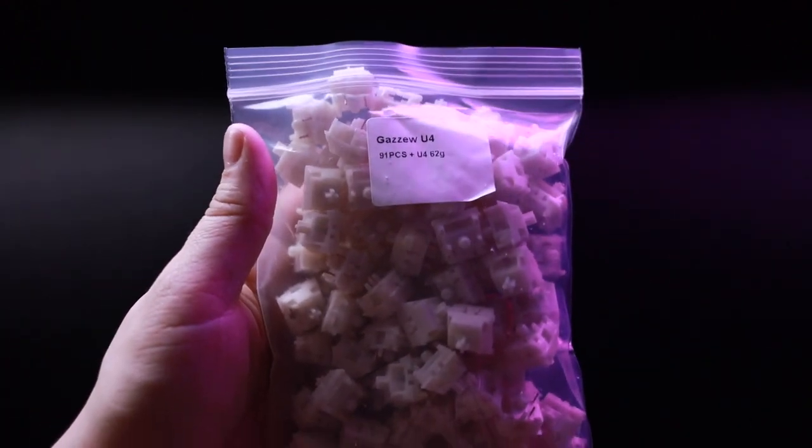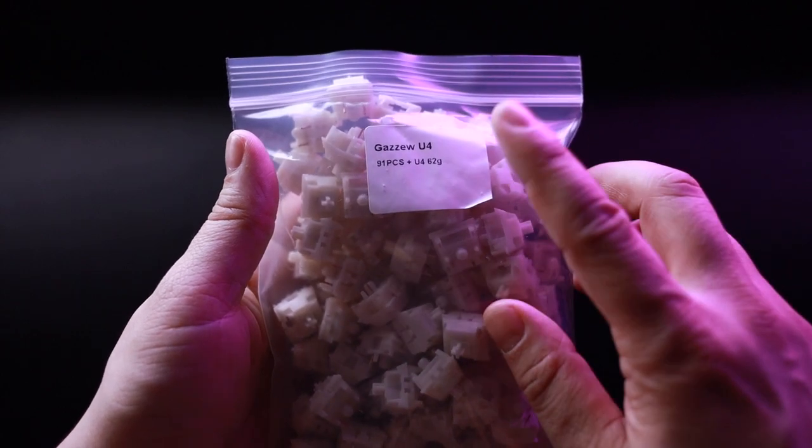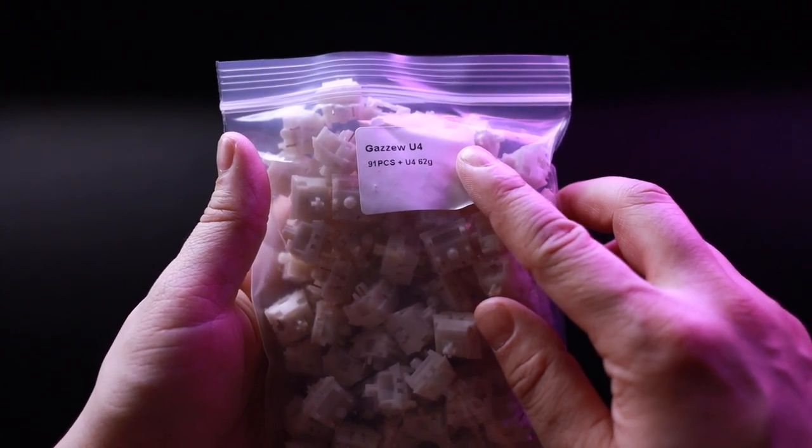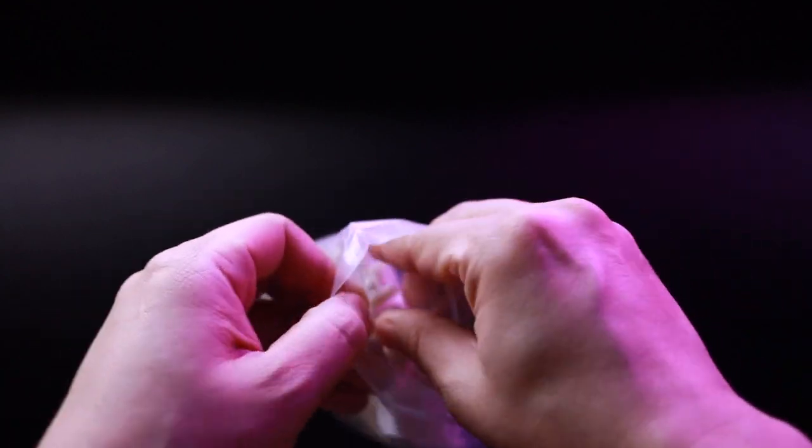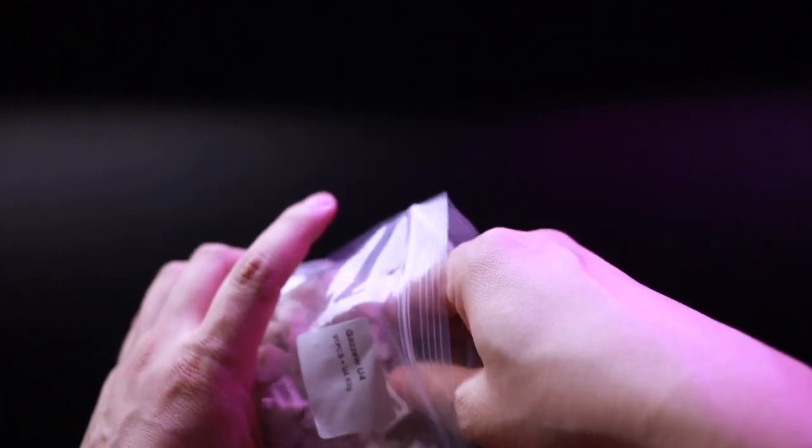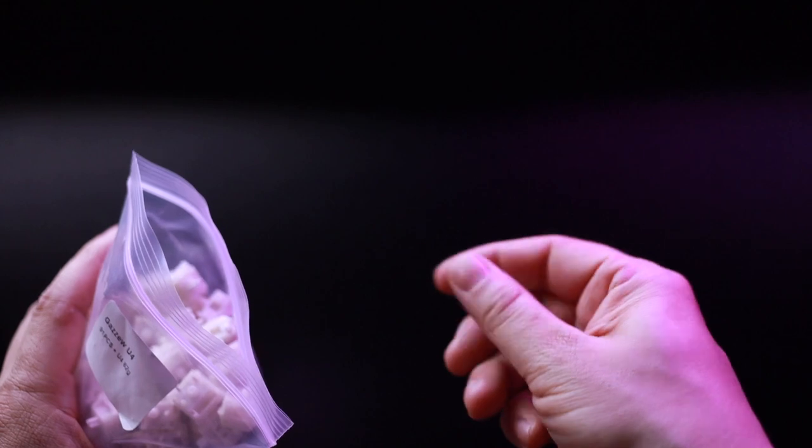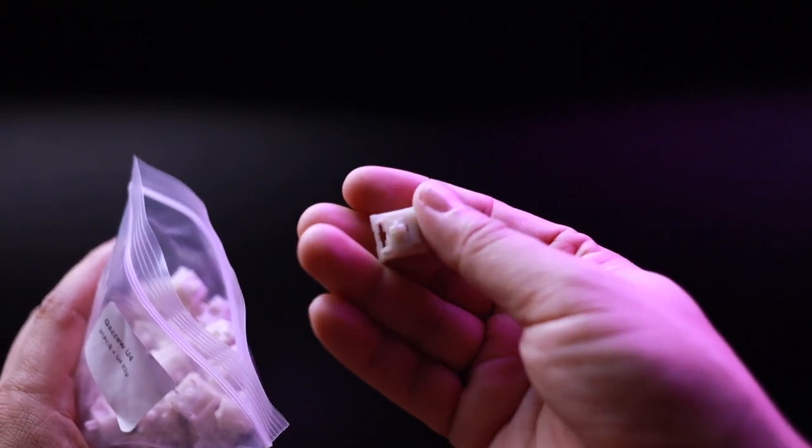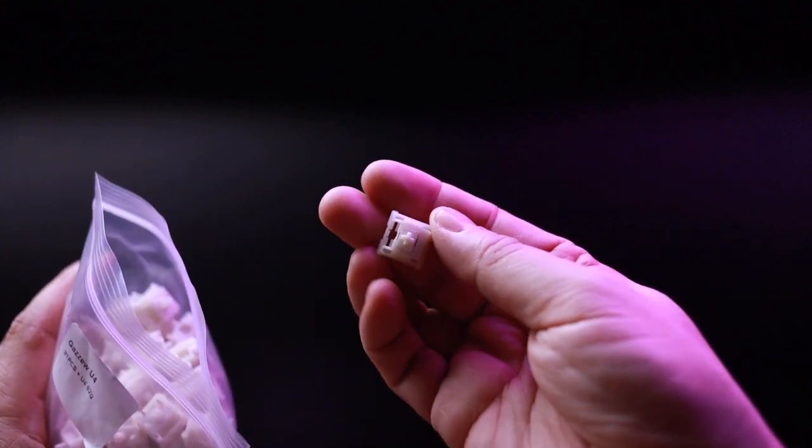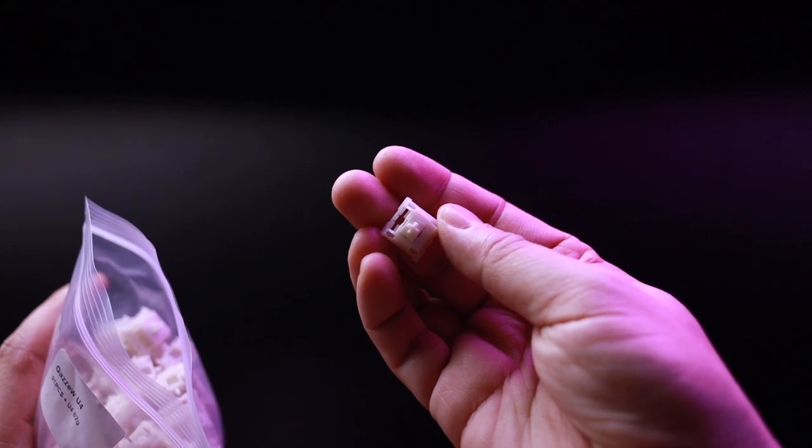For this video I went with the Boba U4 silent tactile switches because I wanted it to be soft and marshmallow. So I went with the solid top with the LED hole, which was probably not the right choice, so I actually just ordered the clear tops.